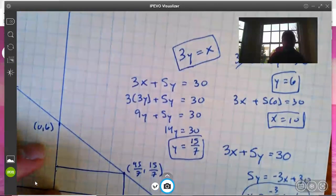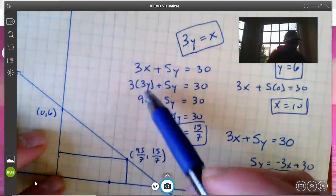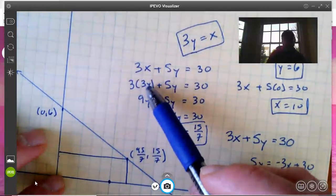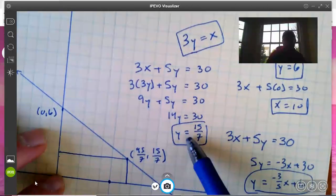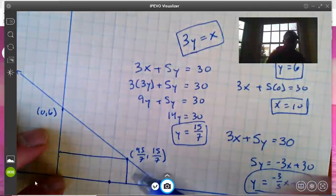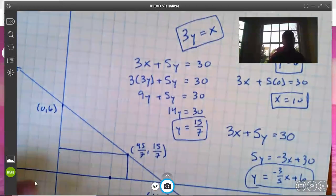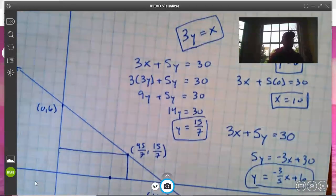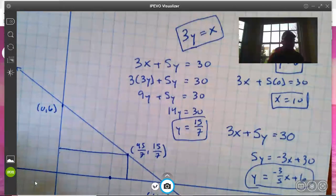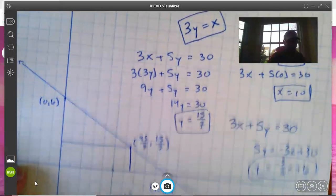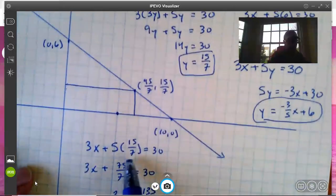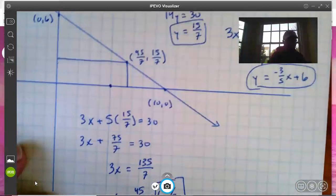We substituted 3y for x in our equation, solved for y, and got 15/7. So we knew the y-coordinate would be 15/7. I suppose at that point we could have just multiplied by three and got 45/7, but as a good double check we'd want to make sure that we substitute 15/7 into the equation to verify we get 45/7, which we do.